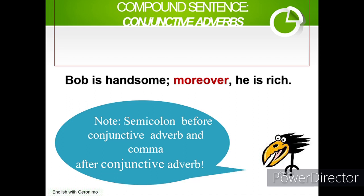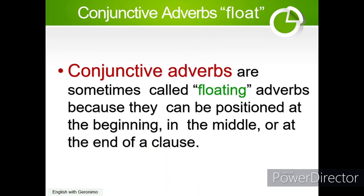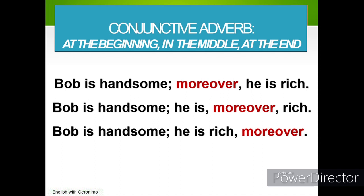Please take note: use a semicolon before the conjunctive adverb and a comma after it. Conjunctive adverbs are sometimes called floating adverbs because they can be positioned at the beginning, in the middle, or at the end of a clause. For example: beginning — 'Bob is handsome; moreover, he is rich'; middle — 'Bob is handsome; he is, moreover, rich'; end — 'Bob is handsome; he is rich, moreover.'